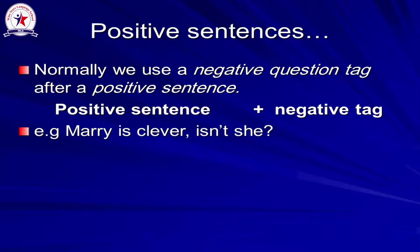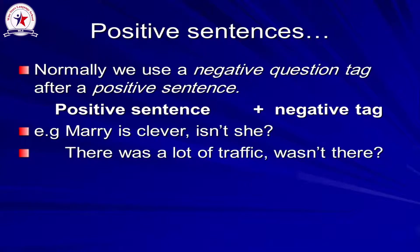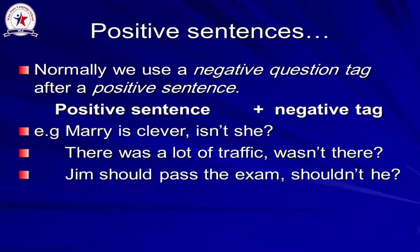The second sentence: 'There was a lot of traffic — wasn't there?' The auxiliary is the verb 'to be' — 'was' — and because the sentence is positive, the question tag should be negative: 'wasn't there.'